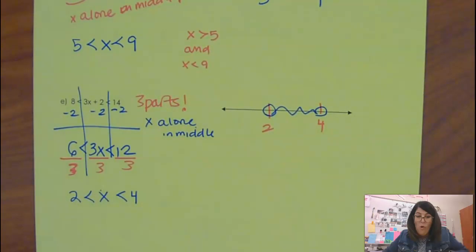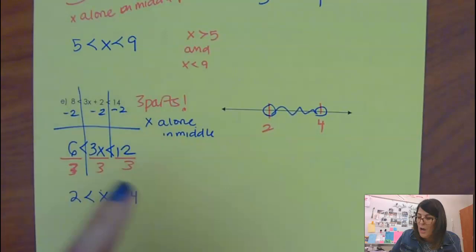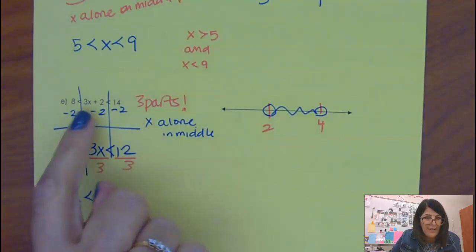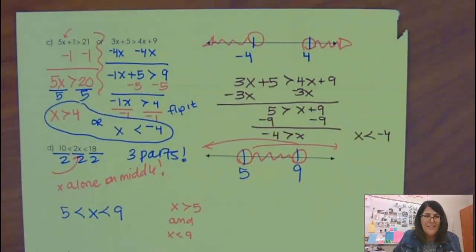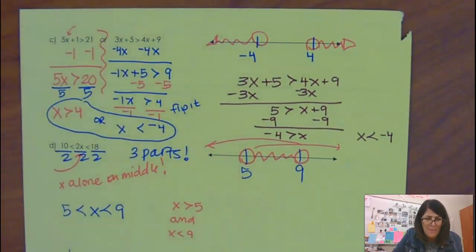Okay, now I hope that you are ready and able to solve compound inequalities. Remember, if it's an AND written like this, you get the X alone in the middle. If it's an OR, just do the two baby problems.